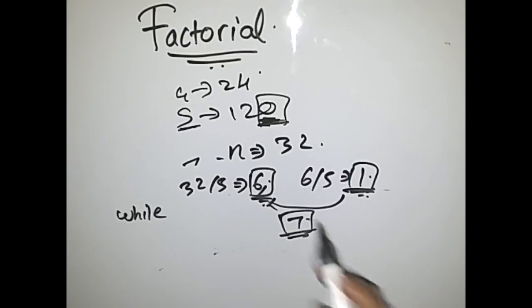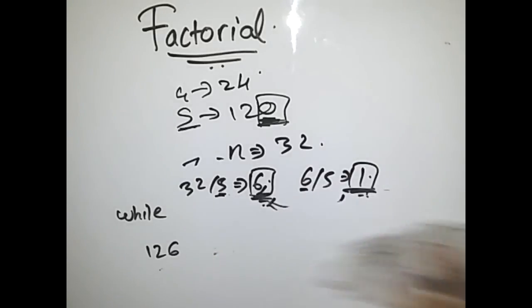Keep on dividing the number until it is greater than or equal to 5 and just keep on adding the quotients of the number. Let's take another example: if the number is 126.